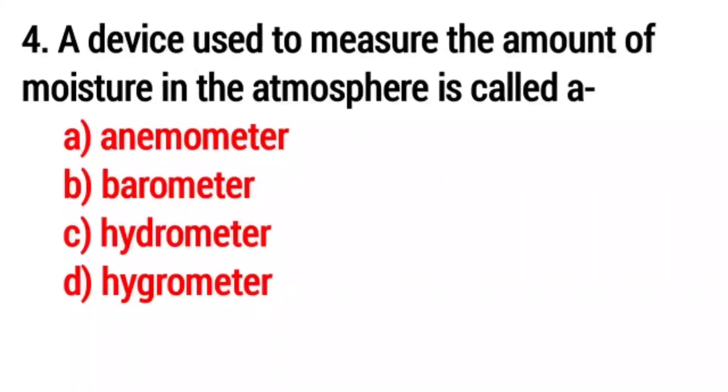Q4. A device used to measure the amount of moisture in the atmosphere is called? The right answer is option D, Hygrometer.